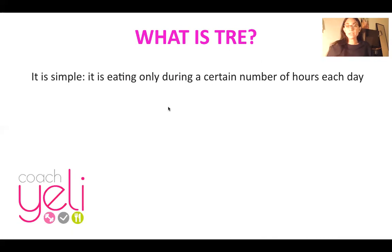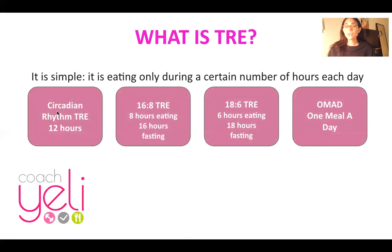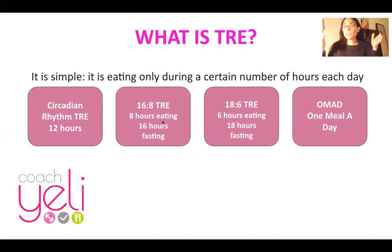So what is TRE? It is very simple — eating only during a certain number of hours each day. There are several ways of doing this. There's circadian rhythm TRE, which is a 12-hour feeding window followed by a 12-hour fasting window. There is 16:8 time-restricted eating, meaning you restrict your eating window to 8 hours and fast for 16 hours. There's 18:6, meaning eating in a 6-hour window and fasting for 18 hours.